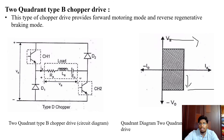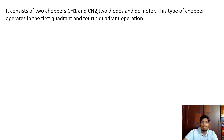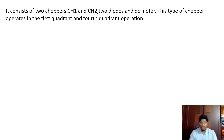Further details can be known in the coming slides. This circuit consists of two choppers CH1 and CH2, two diodes, and a DC motor. This type of chopper operates in first and fourth quadrant operations. These two choppers are mainly considered for the two quadrant chopper operation. Thank you.